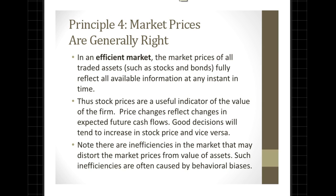The fourth principle is that market prices are generally right. We have the theory of the efficient market hypothesis, which posits that the market prices of all traded assets fully reflect all available information. Therefore stock prices are a useful indicator of the value of the firm. Prices fluctuate in a free market — they can go up or down depending on the news and information available to investors. Price changes reflect changes in expected future cash flows: good news means the company has good prospects to generate more cash flows, and as a result investors would be compensated more highly.